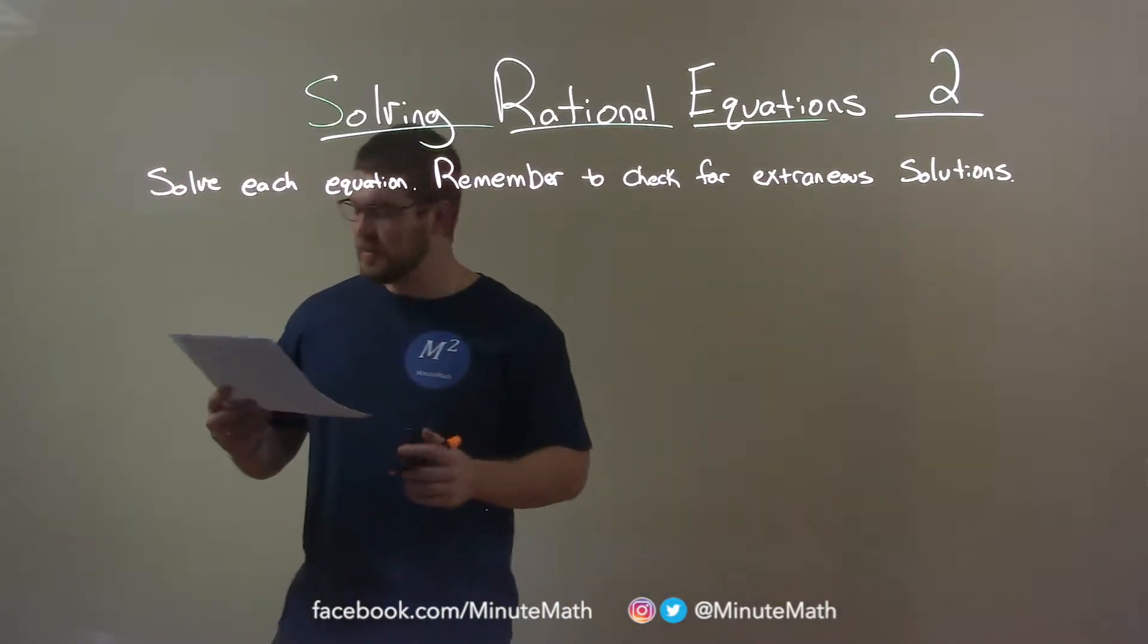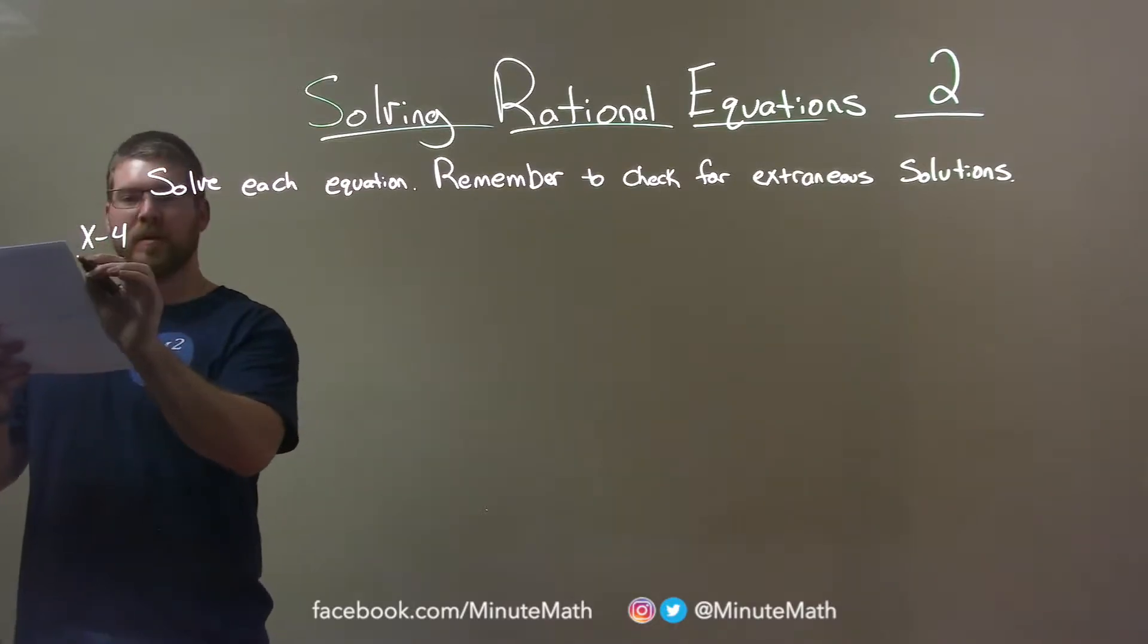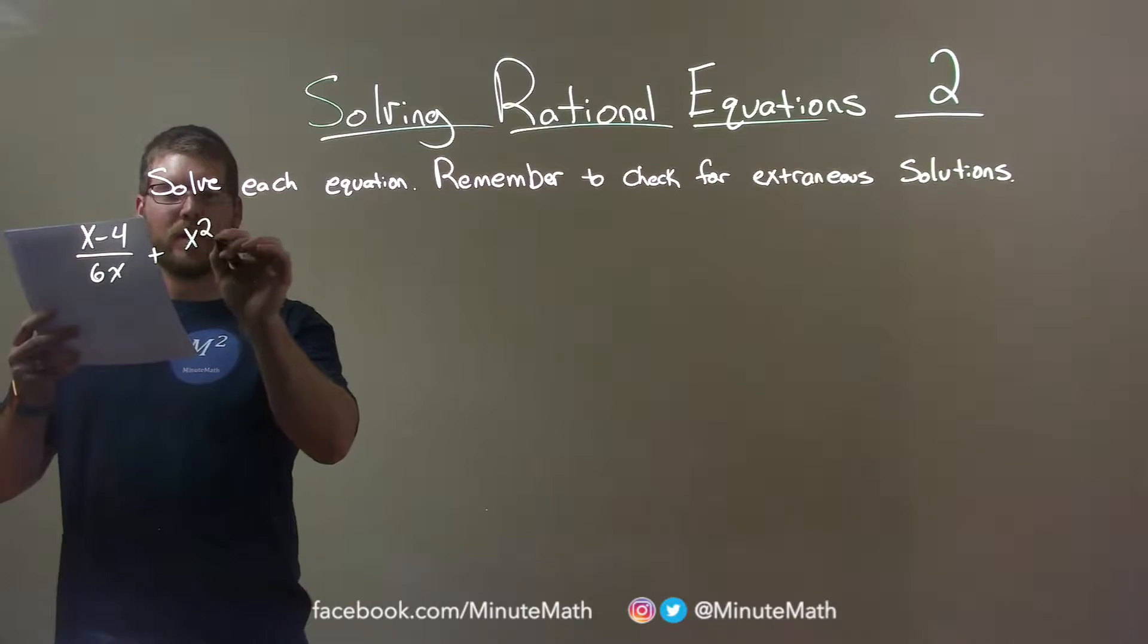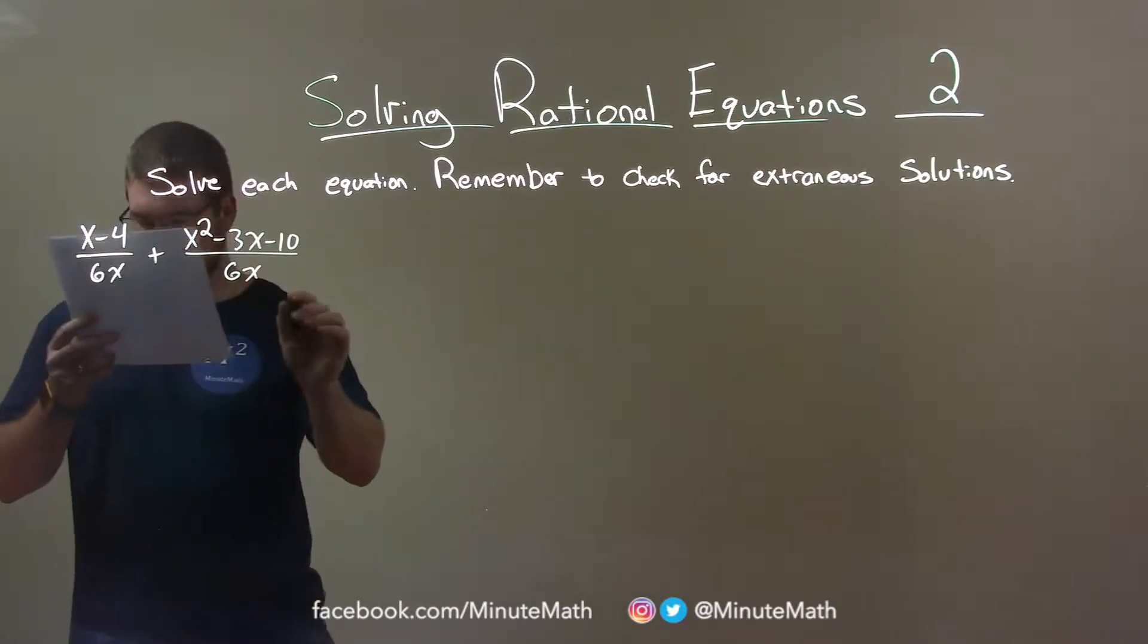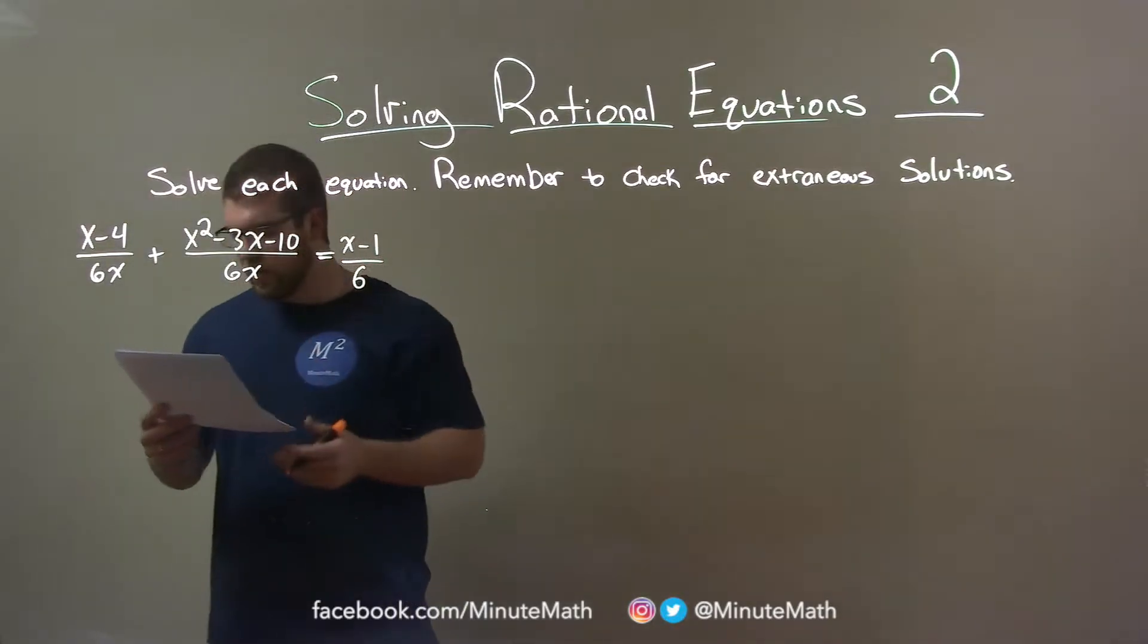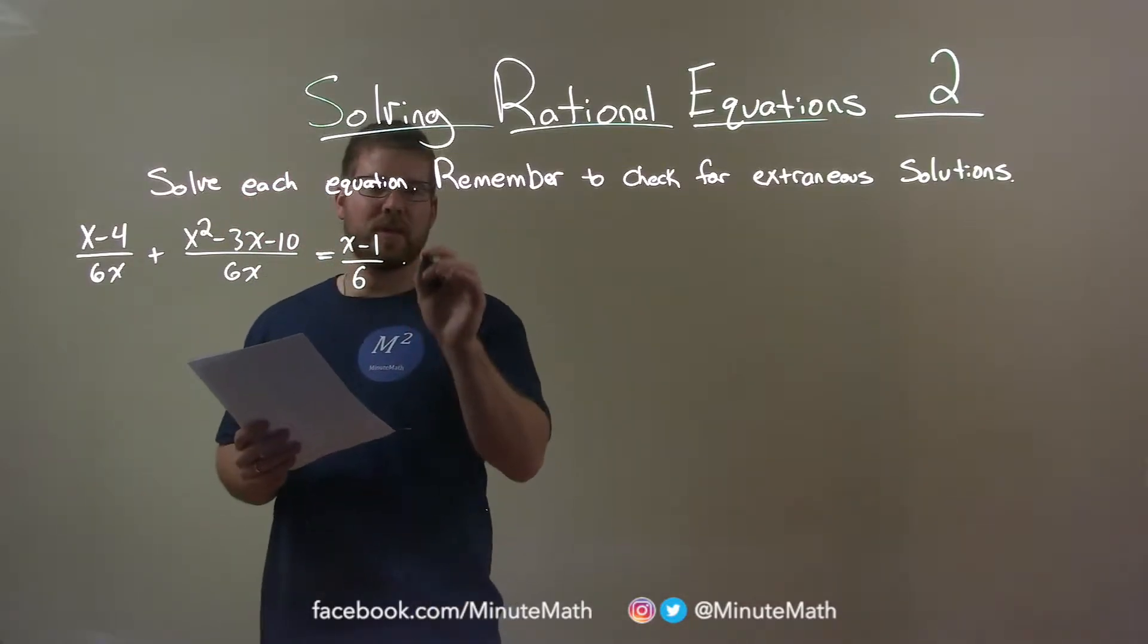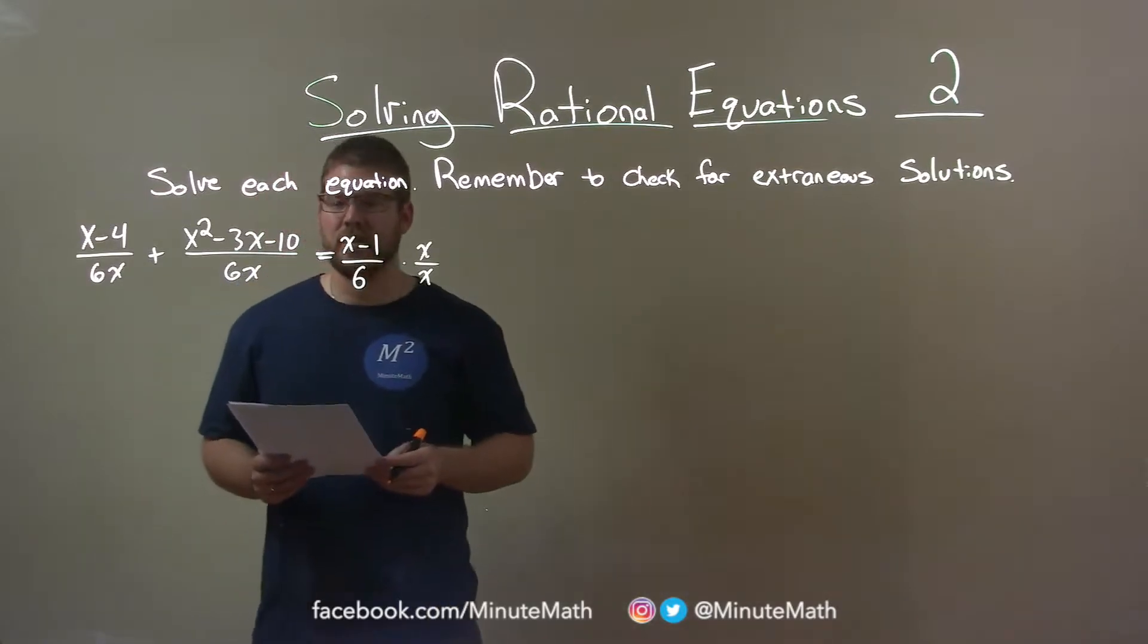If I was given this problem, x minus 4 over 6x plus x squared minus 3x minus 10 over 6x and say that's equal to x minus 1 over 6. Well, I notice all of these have the same denominator except for the right, which is 6 here. So to fix that, we multiply that part by x over x, we should get a 6x in the denominator.